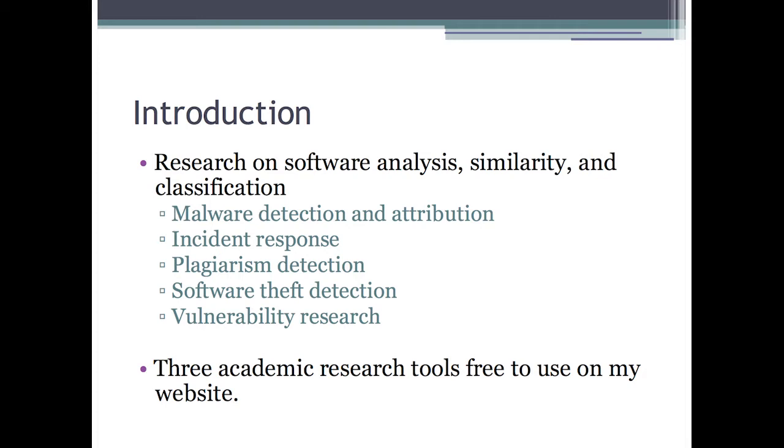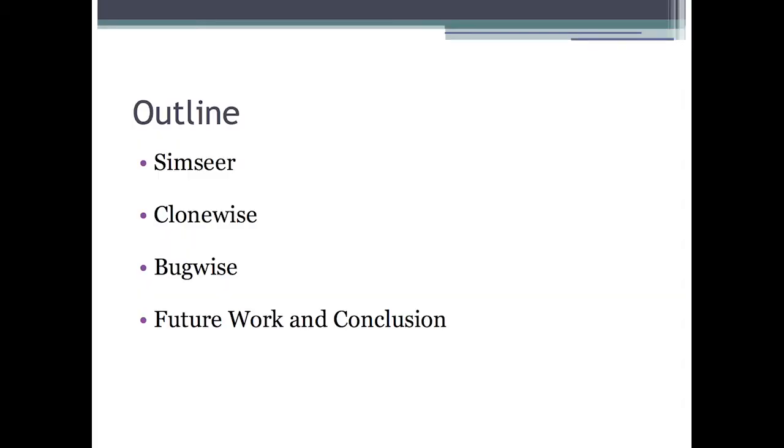My website offers three research tools — academic research tools. The first is SimSea, a software similarity and visualization tool to detect plagiarism, software theft, or malware variants. Another tool is CloneWise, which is about detecting the reuse of library code and identifying vulnerabilities because of that reuse. Often libraries go out of date and vulnerabilities occur because of that. The third tool is BugWise, a bug detection system that works on binaries.